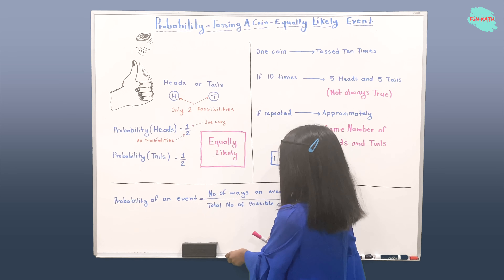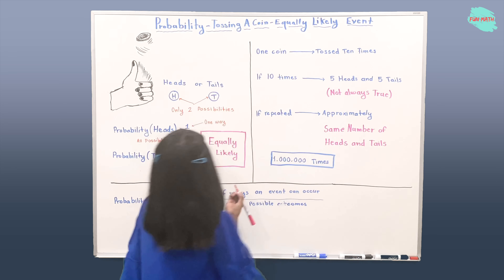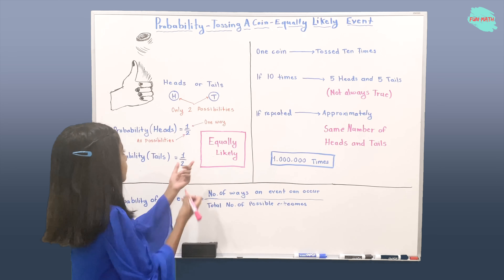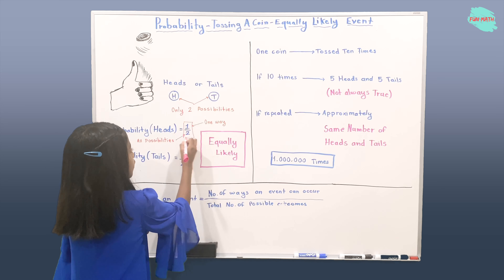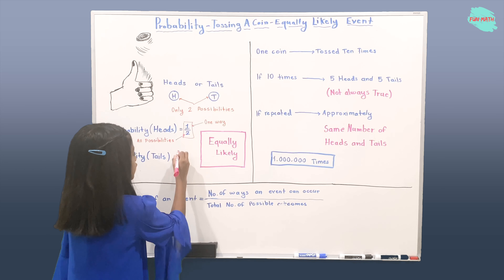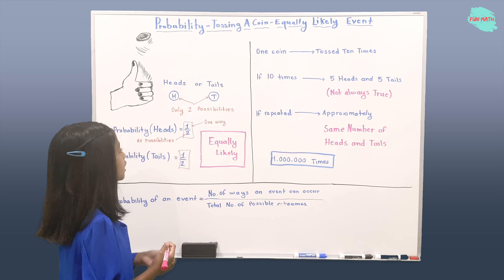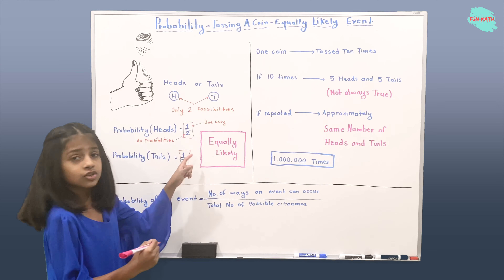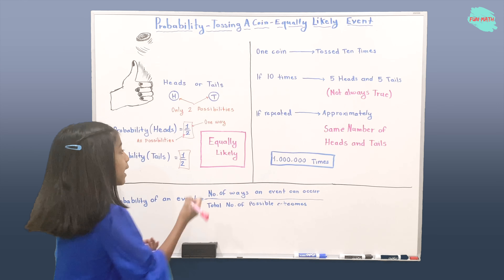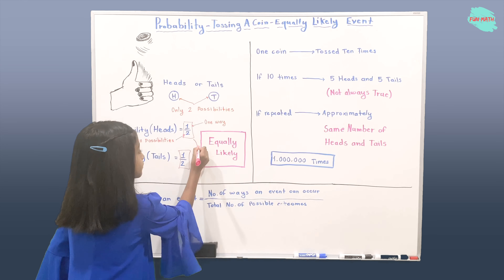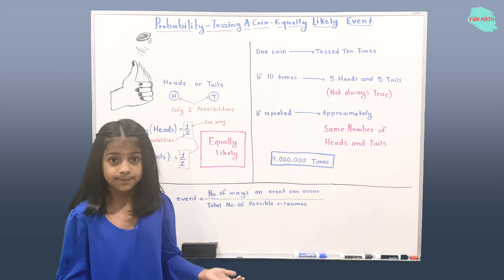If you see, they're the same: one over two here and one over two here. We call them equally likely events.